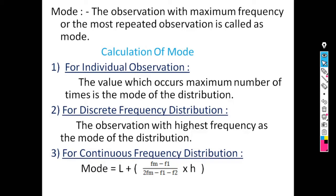If there is a single observation with maximum frequency, the distribution is known as unimodal. If there are two values which occur with maximum and equal frequency, the distribution is bimodal. If there are more than two values of mode, the distribution is known as a multimodal distribution.